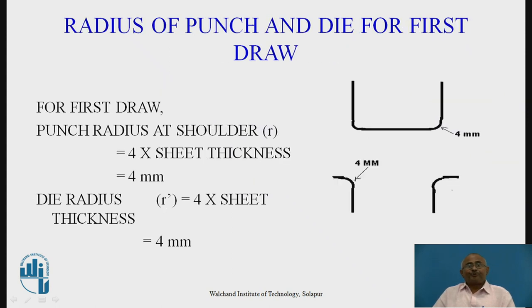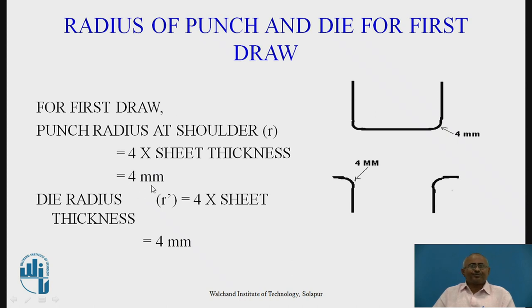Now we have to decide the radii of the punch and die set for the first draw. For the first draw, punch radius at the shoulder is equal to 4 × sheet thickness = 4 × 1 mm = 4 mm. Die radius is also equal to 4 × sheet thickness = 4 mm. So die and punch radius for the first draw is 4 mm.